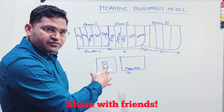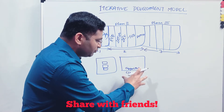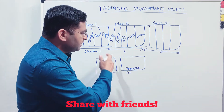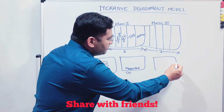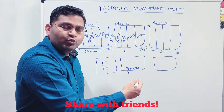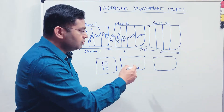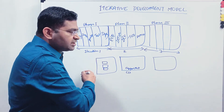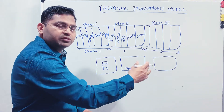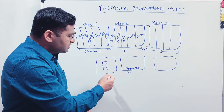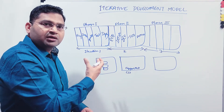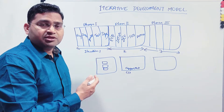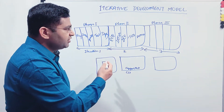In the first phase they build some features, in the next phase they add more features like forgot password and forgot username, and in the third phase they might add features like signing up with Google or Facebook. The advantage here is that instead of waiting two years for the whole release, you can get a release very quickly — something working is available for the customer to review whether it meets their requirements. That was the key advantage of the iterative development model.